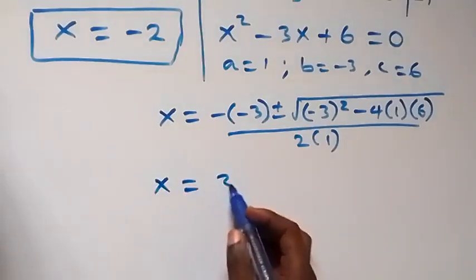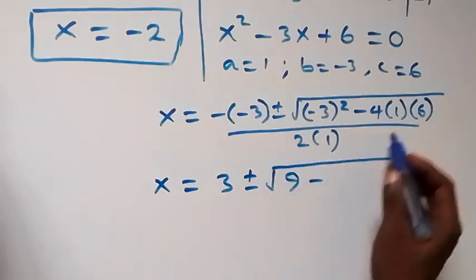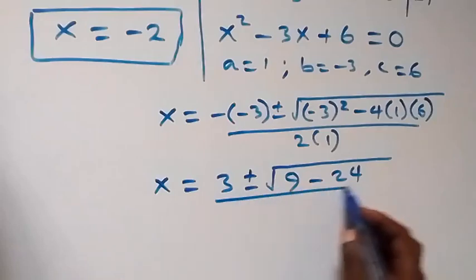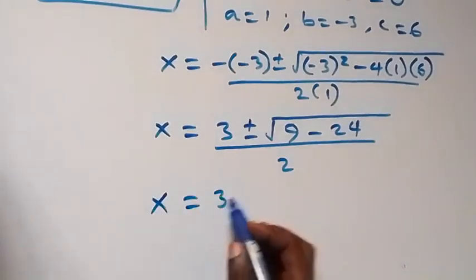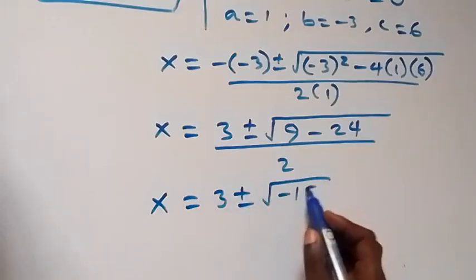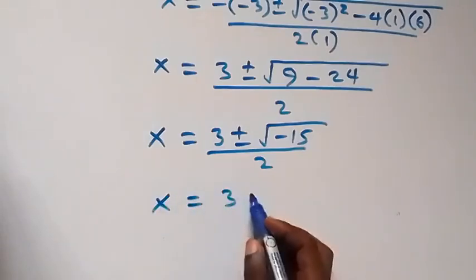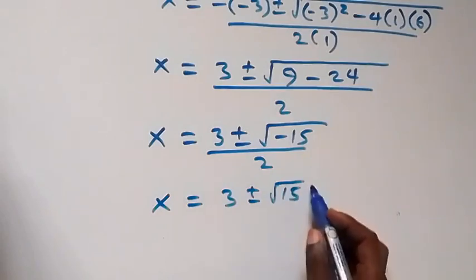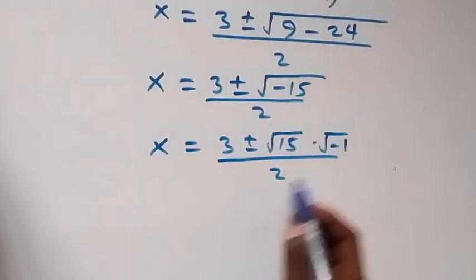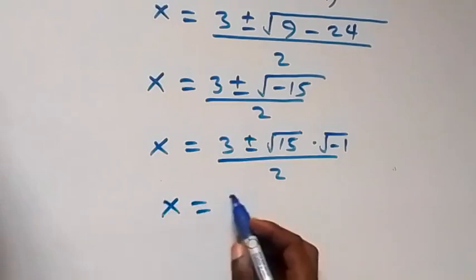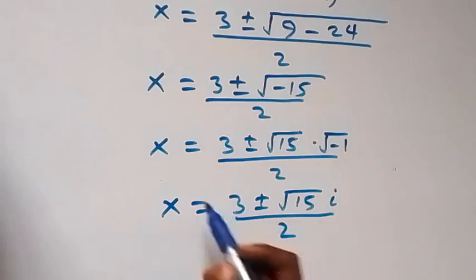This becomes x equals 3 plus or minus the square root of (9 minus 24) over 2, which is x equals 3 plus or minus the square root of minus 15 over 2. We can also write this as x equals 3 plus or minus root 15 times root of minus 1 over 2, and since root of minus 1 is i, we have x equals (3 plus or minus root 15 · i) over 2.